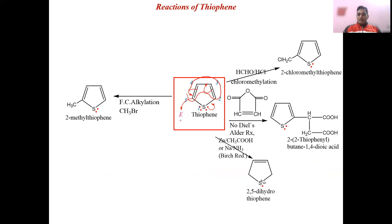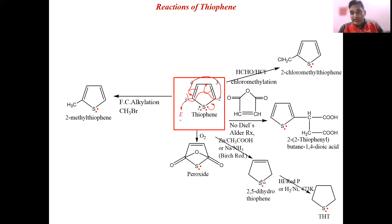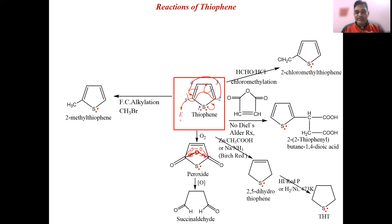Complete reduction gives tetrahydrothiophene (THT). If reaction is carried out in presence of oxygen, peroxides form first, then repulsion between the two oxygen lone pairs causes further oxidation. The final product is succinaldehyde (OHC–CH2–CH2–CHO).